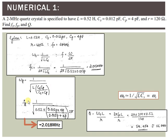For Fp, substituting into the parallel resonance equation gives Fp = 2.018 MHz. Next, the quality factor Q = ω₀L / R, where ω₀ ≈ ωs. Since the question specifies a 2 MHz crystal, we substitute F₀ = 2 MHz, L = 0.52 H, and R = 120 Ω, which gives Q ≈ 55,000. This very high Q value confirms that the 2 MHz quartz crystal provides high frequency stability.